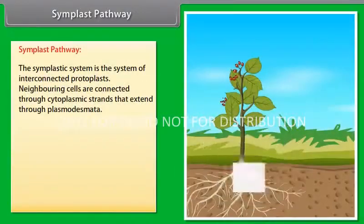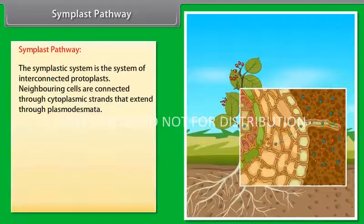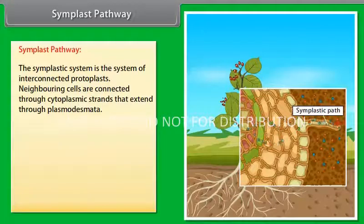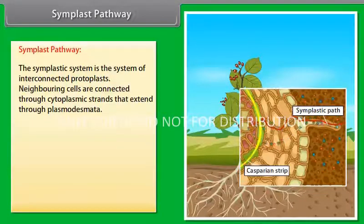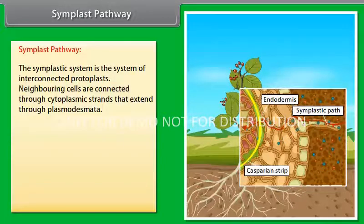Symplast pathway. The other pathway is Symplast pathway. The Symplastic system is the system of interconnected protoplasts. Neighbouring cells are connected through cytoplasmic strands that extend through plasmodesmata.